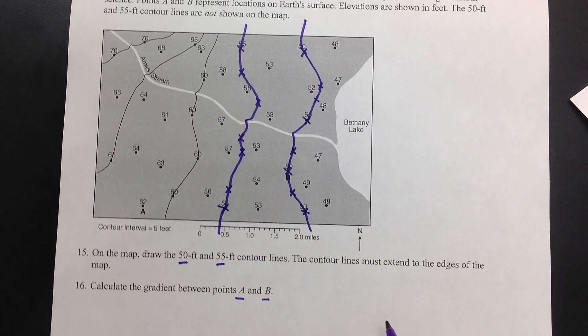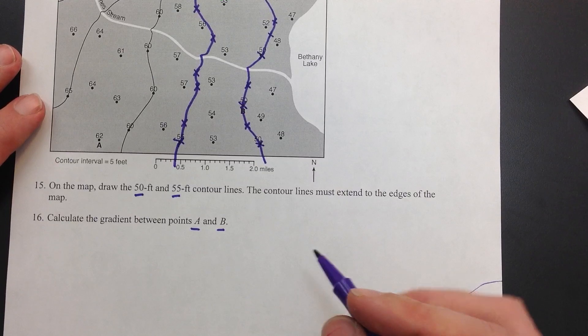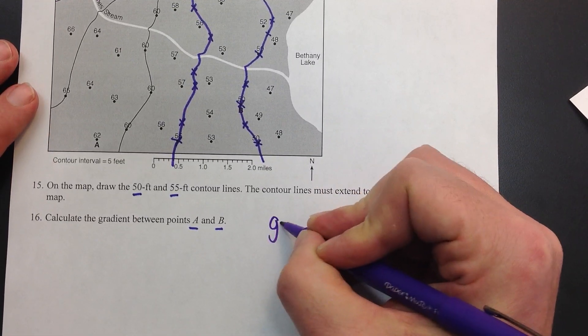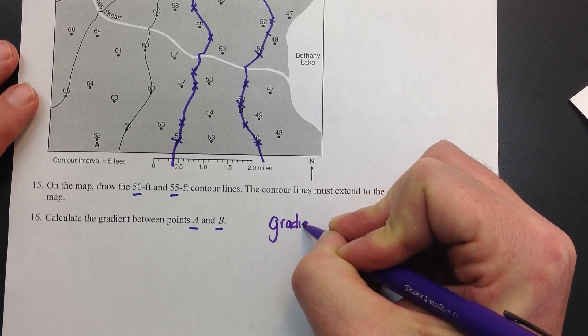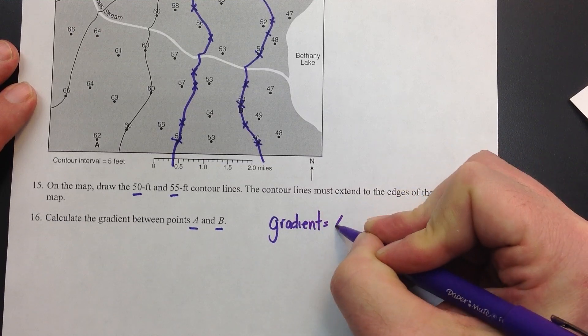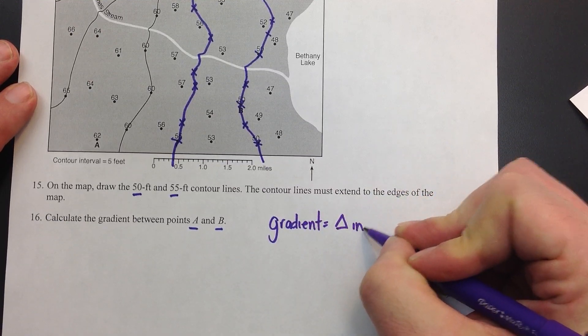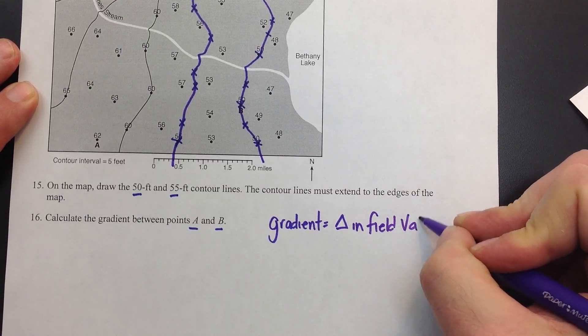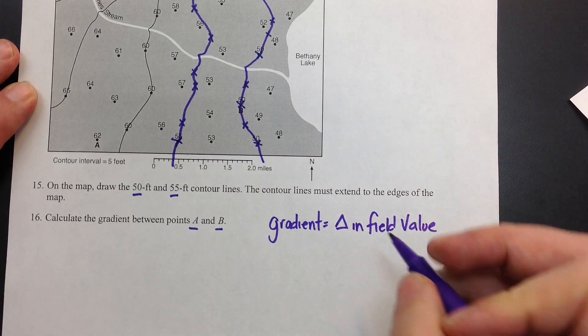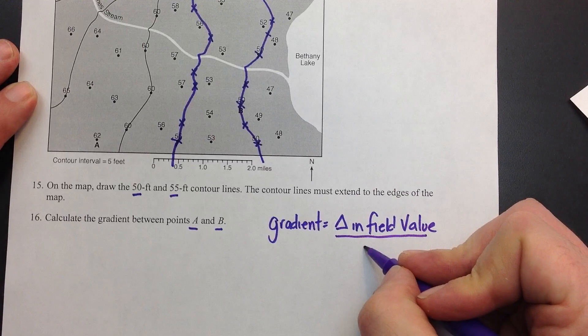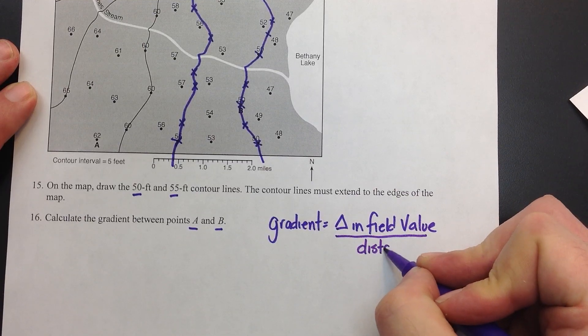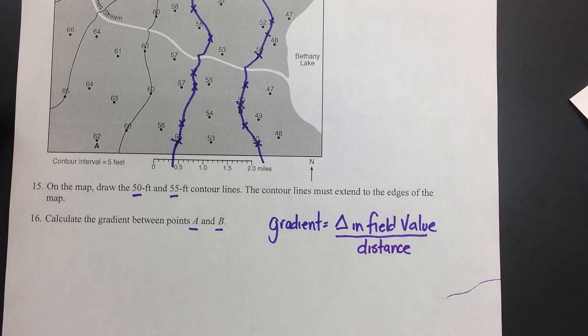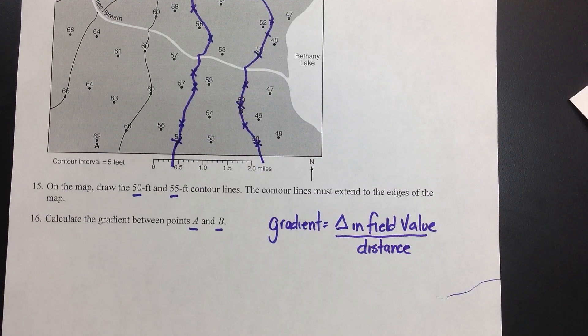The first thing that you need to be able to identify is the gradient formula, which is on page one in the reference table. Gradient is going to be the change in field value. Field value is just whatever we're measuring on the map, divided by the distance between it. That formula is going to be directly on your reference table.